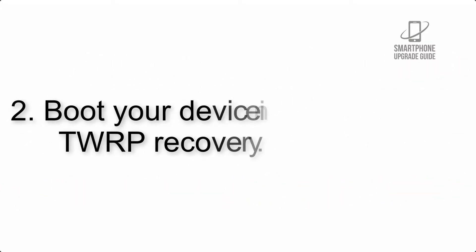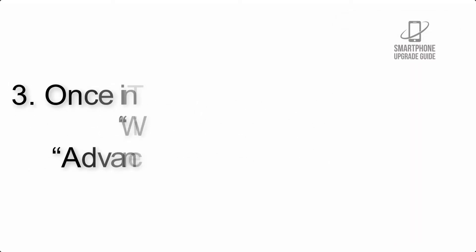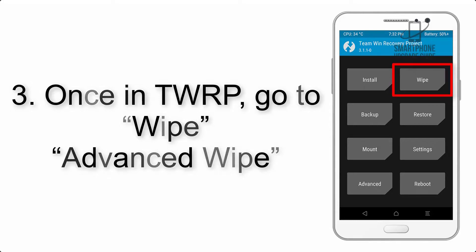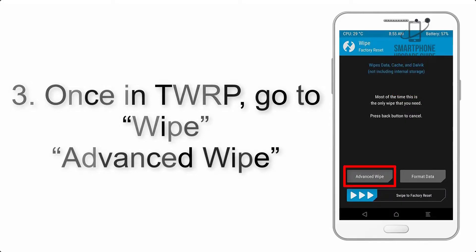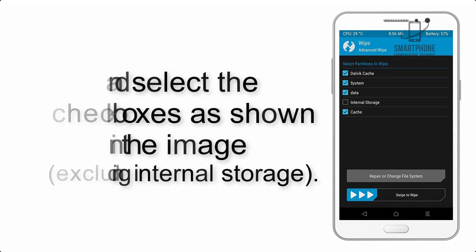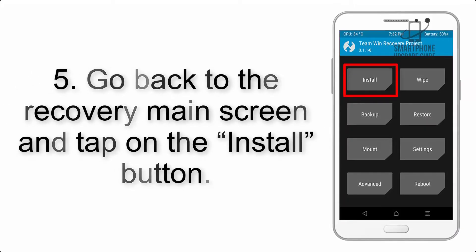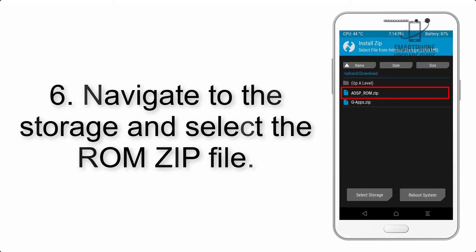Step 2: Boot your device into TWRP recovery. Once in TWRP, click on Advanced Wipe and select the checkboxes as shown in the image, excluding internal storage. Step 4: Swipe the button to wipe the device.